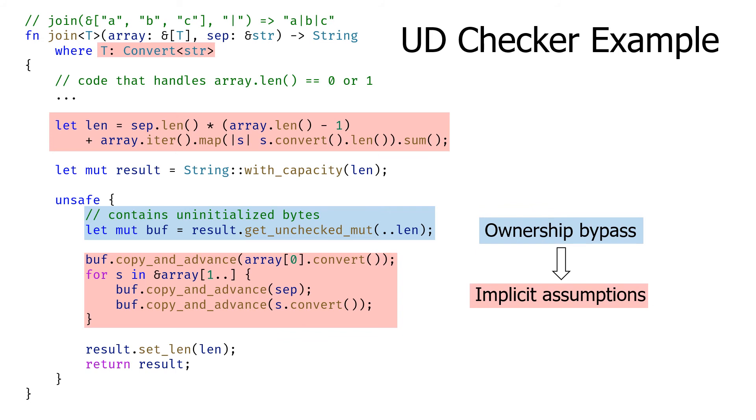In the join example, the unsafe data flow checker detects the safety bypass, marked as blue, and the assumptions on user-provided logic, marked as red. It then detects the data flow from the safety bypass to the user-provided logic and generates a warning based on the observed flow. That's the basic idea of the unsafe data flow checker, and the detail of the algorithm is described in our paper.